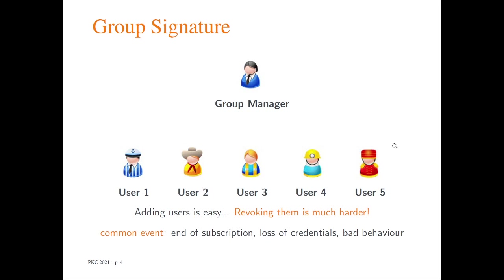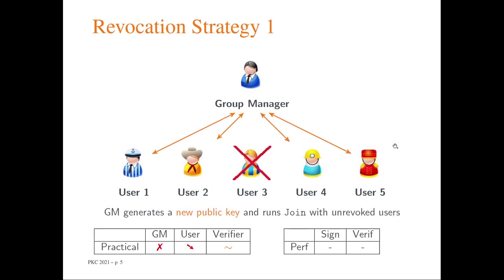For existing group signature schemes, there are essentially three families of revocation systems. The first strategy is one where the group manager generates a new public key and then runs the join algorithm with every unrevoked user. The interest of this strategy is that it does not impact the signature or verification process, and moreover it works with any group signature scheme.